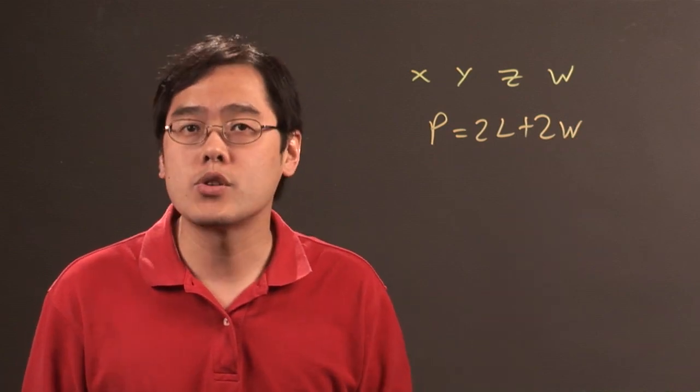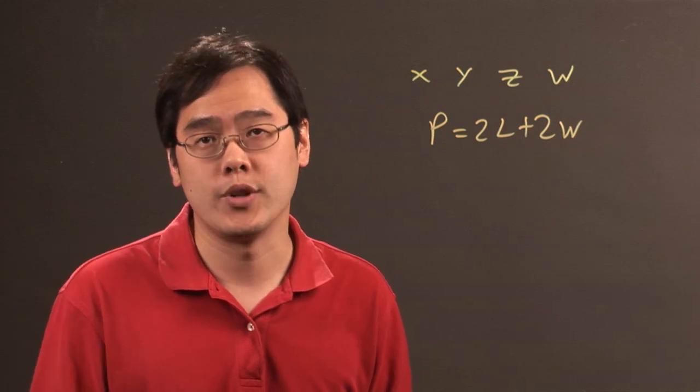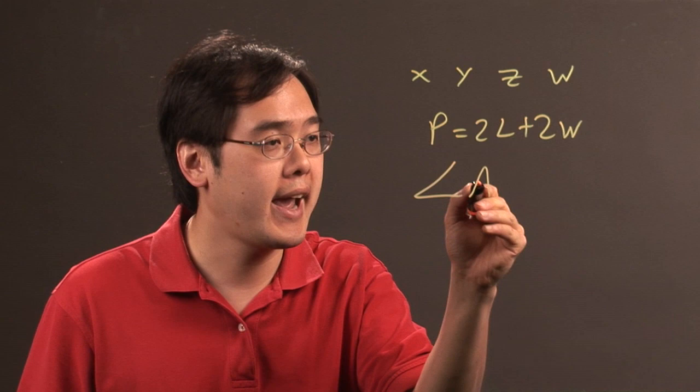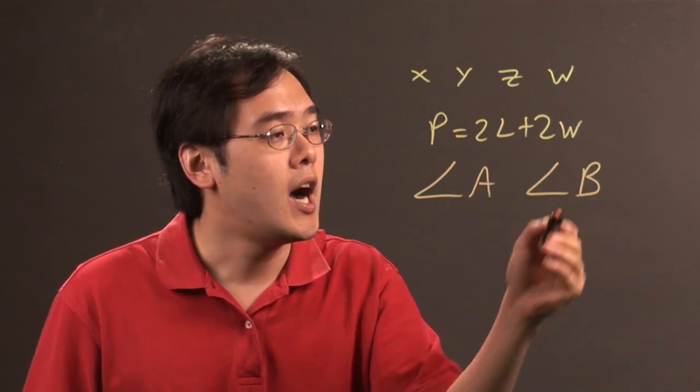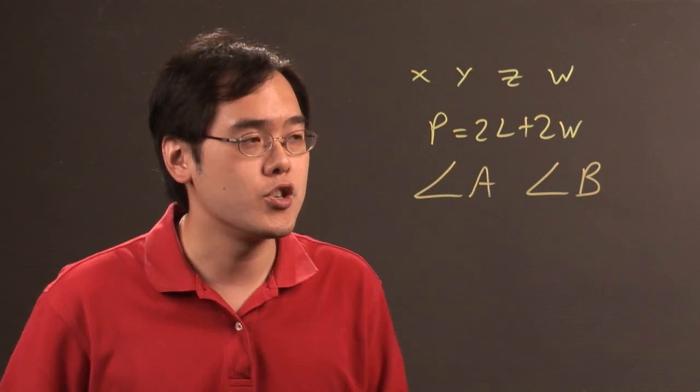Now, those are the few instances in which you would see capital letters. But also in trigonometry, you would see capital letters in angle forms. For example, you have angle A, angle B, oftentimes those are used to indicate measures of angles.